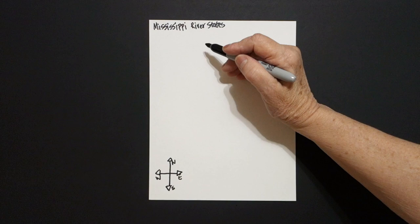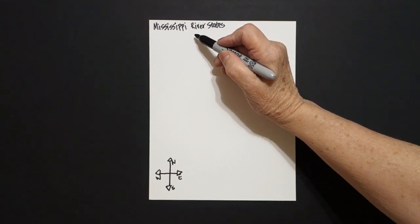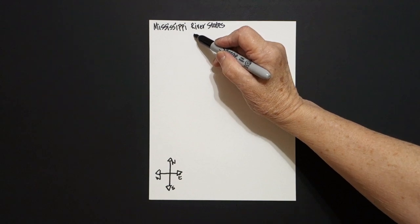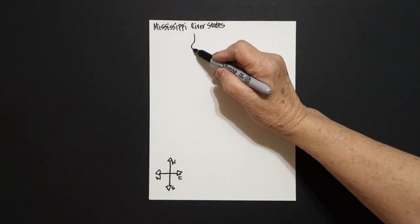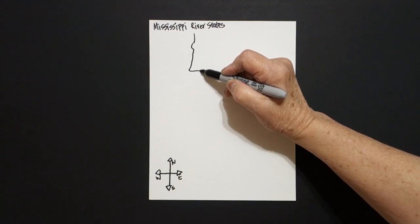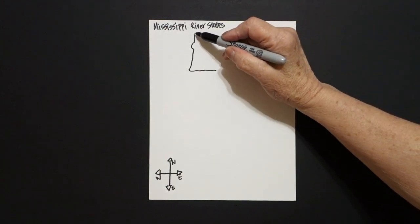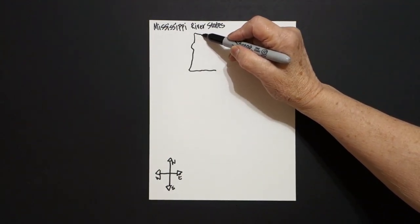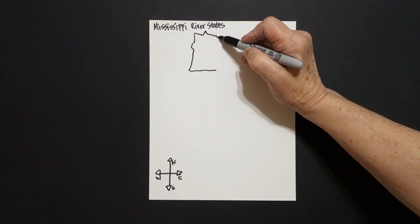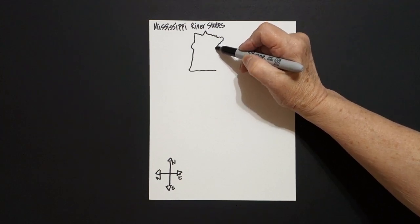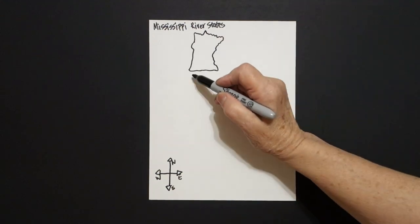We're going to start up here and freeform draw the states, so if they don't look quite like they're supposed to, it's okay. Draw a straight line down, little curve line out, straight line down, curve line in, leave it floating. Come up to the top, little wavy line, straight diagonal up, little wavy line across, down, keep going, and connect. Come right underneath.